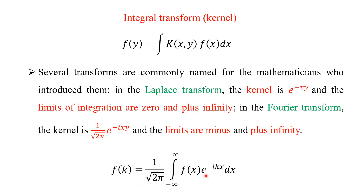I want to convert f of x in terms of f of k. I have to carry out this integral, where 1 over square root of 2pi times e to the power ikx is called the kernel — the kernel of that function. This process is called integral transform.